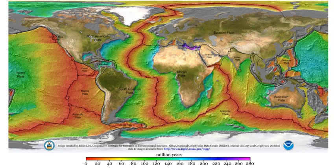Electromagnetic waves occur in the ionosphere and magnetosphere as well as the Earth's outer core. Dawn chorus is believed to be caused by high-energy electrons that get caught in the Van Allen radiation belt. Whistlers are produced by lightning strikes. Hiss may be generated by both. Electromagnetic waves may also be generated by earthquakes — see seismoelectromagnetics.